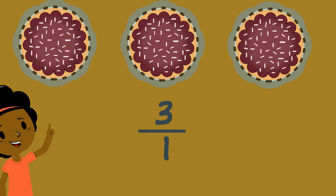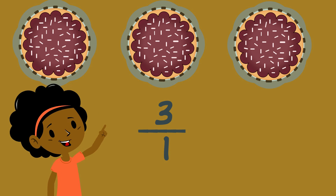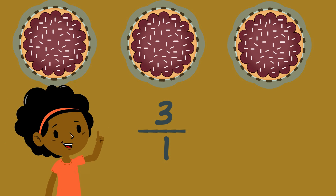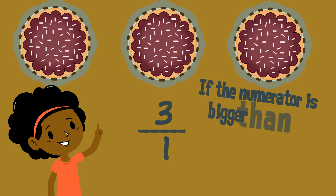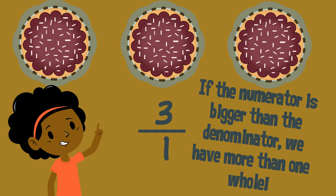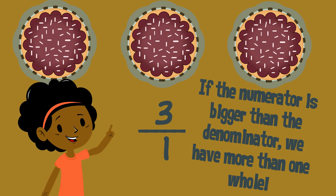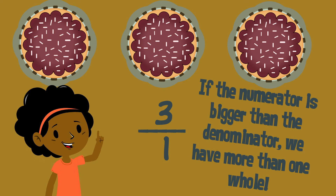Mia notices something interesting. If the numerator, or the top number, is bigger than the denominator, or the bottom number, we have more than one whole.